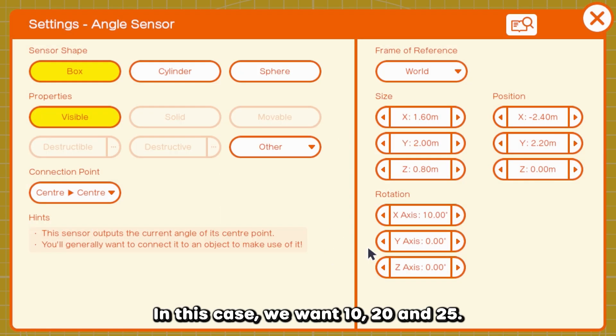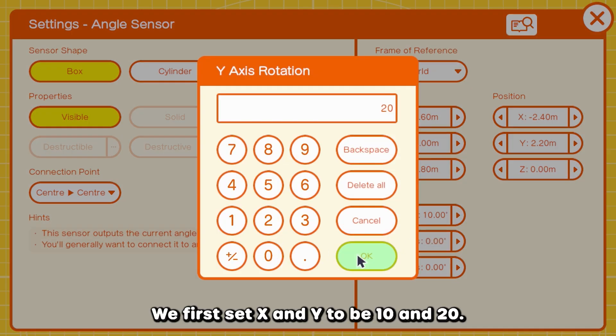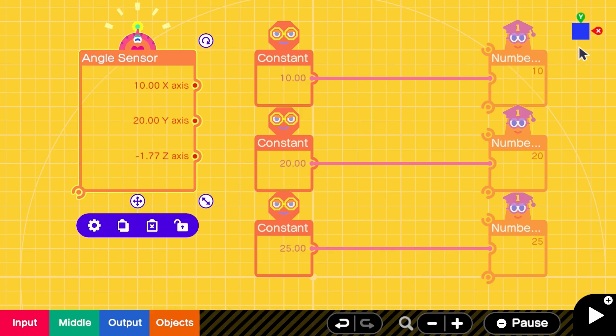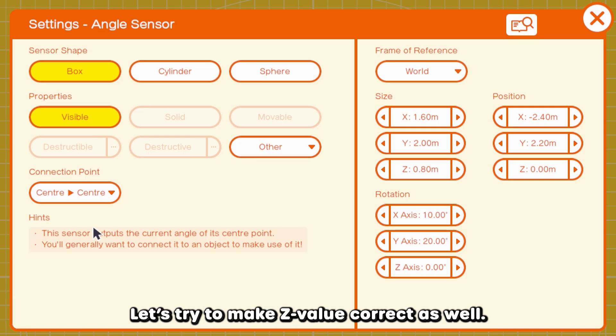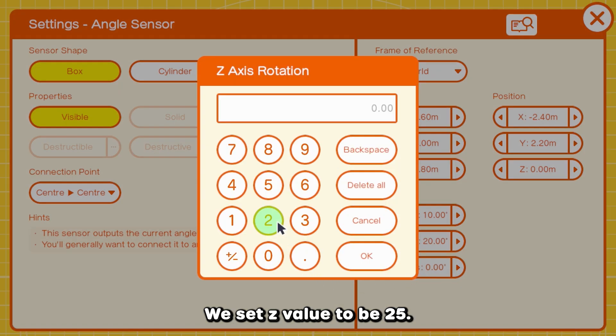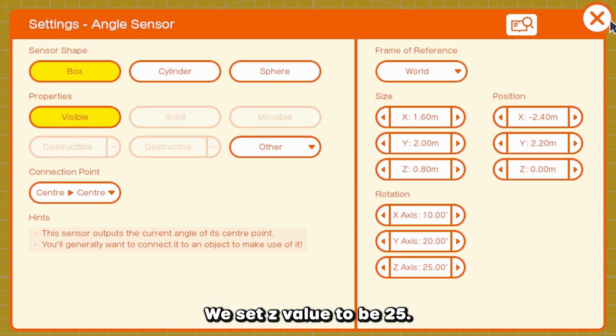In this case, we want 10, 20, and 25. We first set X and Y to be 10 and 20. X and Y values look correct. Let's try to make Z value correct as well. We set Z value to be 25.